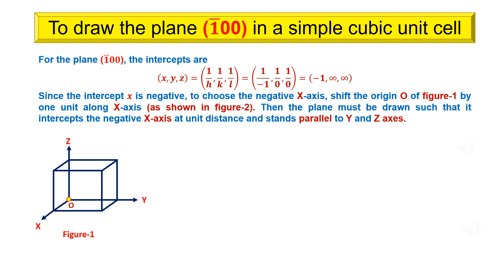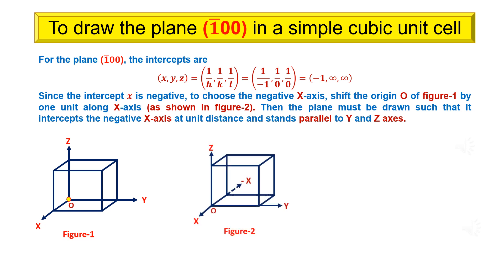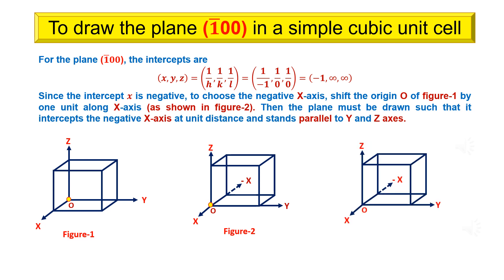For the plane (bar 1, 0, 0), the intercepts are x, y, z equals minus 1, infinity, infinity. Since the intercept x is negative, to choose the negative x-axis, shift the origin of figure 1 by 1 unit along x-axis, as shown in figure 2. Then the plane must be drawn such that it intercepts the negative x-axis at unit distance and stands parallel to y and z axes.